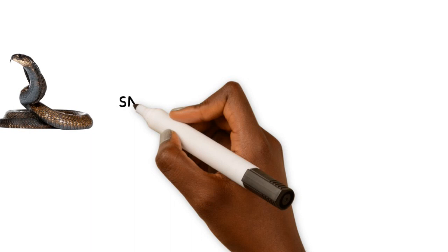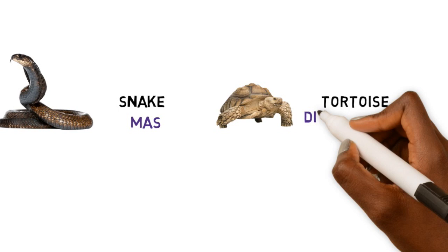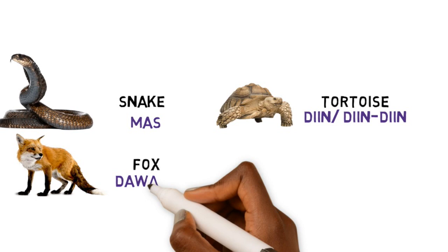A snake is Mas, while a tortoise is Din or Din Din. A fox is Dawao, while a wolf is Yay.